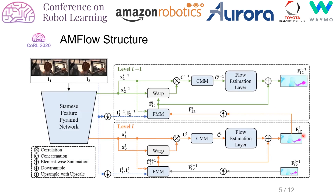This is the structure of our AMFlow. We also adopt the popular cost-volume structure, but add two new module types, FMMs and CMMs, to improve the performance. Note that here we only show two pyramid levels for simplicity.